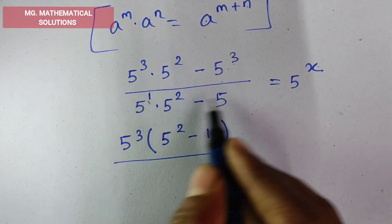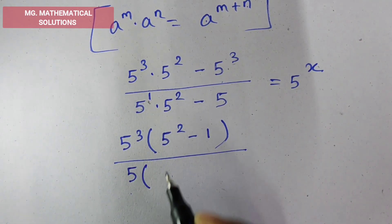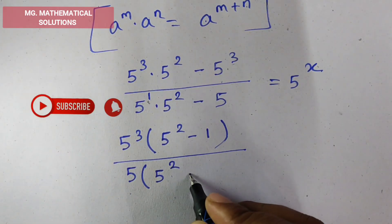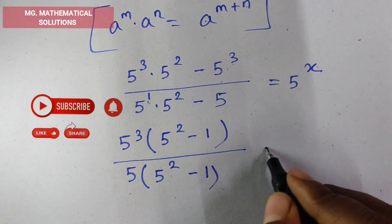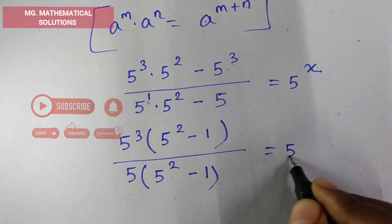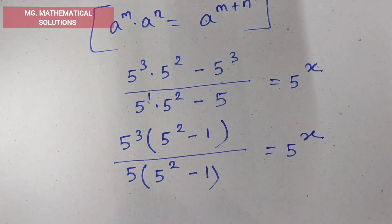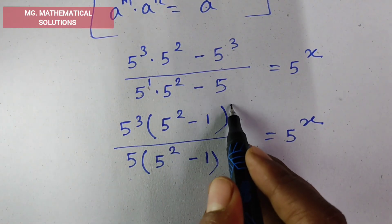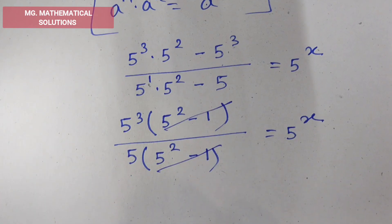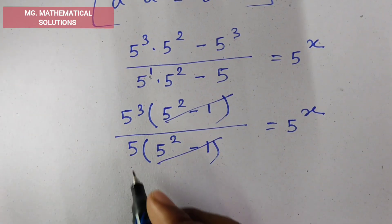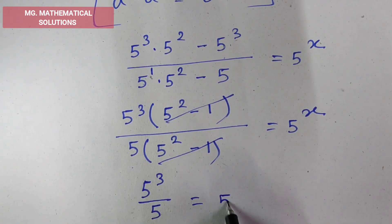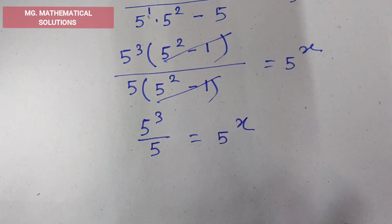Now we take common 5, so here 5 square minus 1, equal to 5 to the power x. So 5 square minus 1 and 5 square minus 1 are cancelled. So we have 5 cube by 5 equal to 5 to the power x.